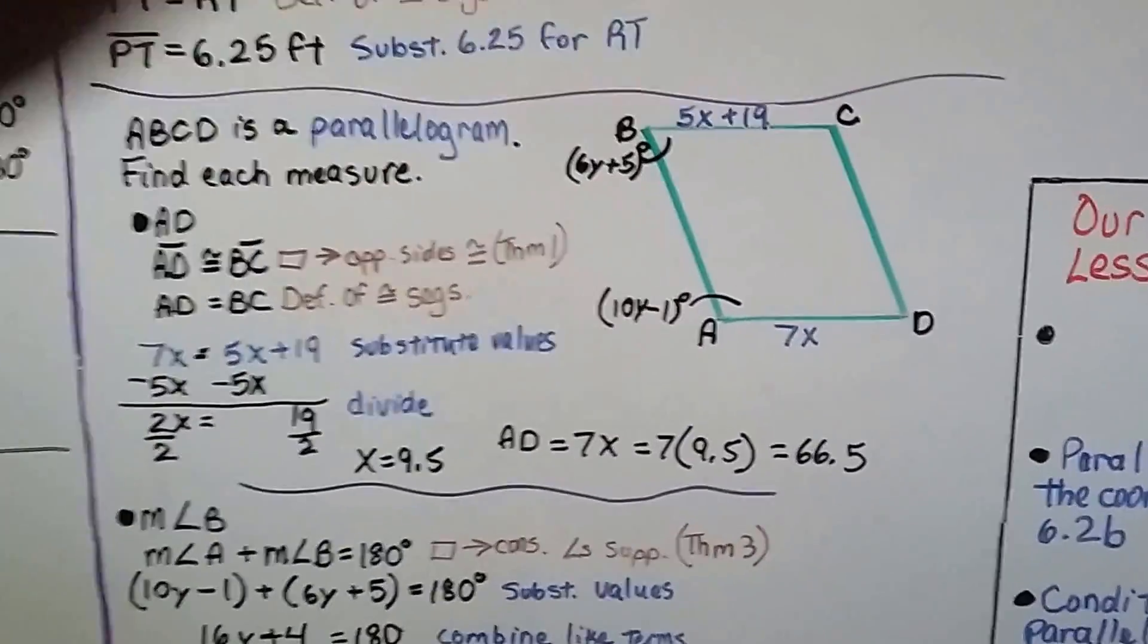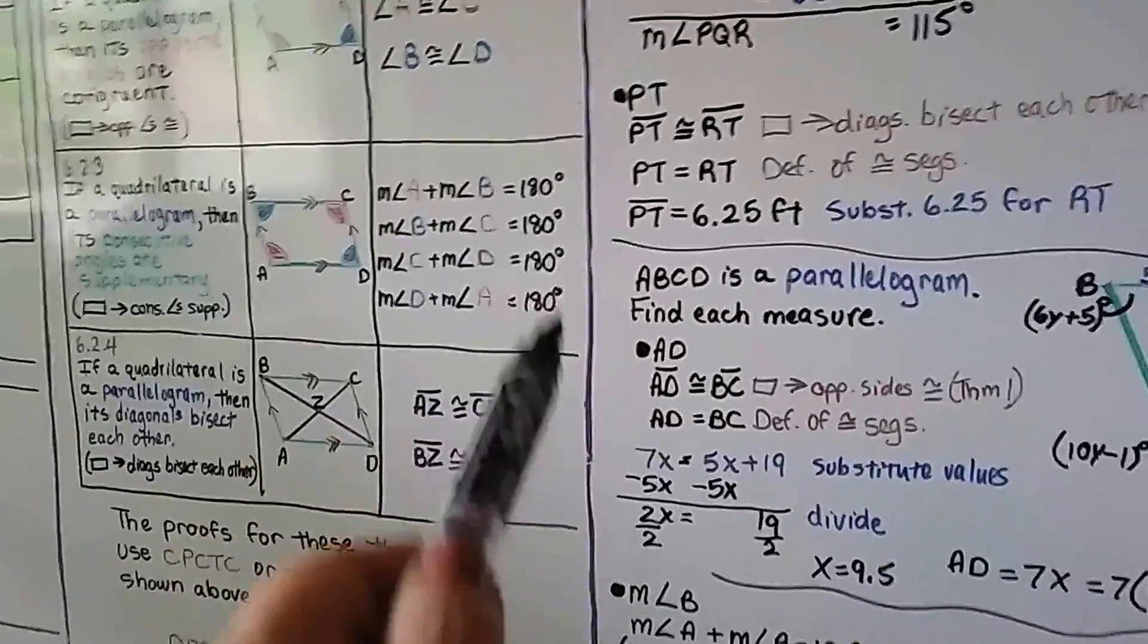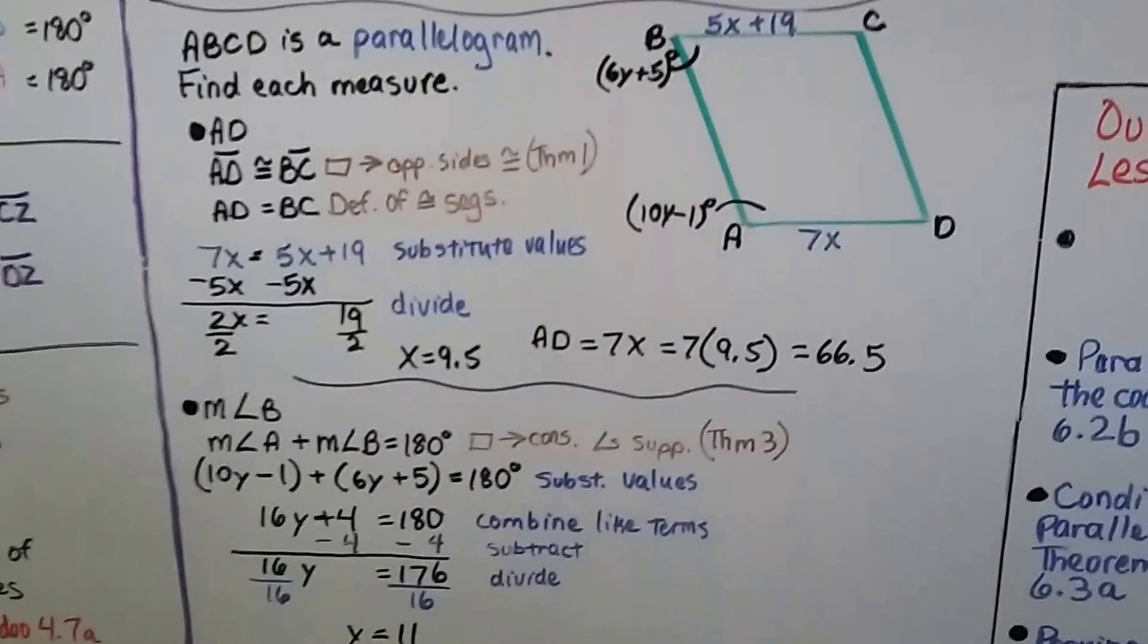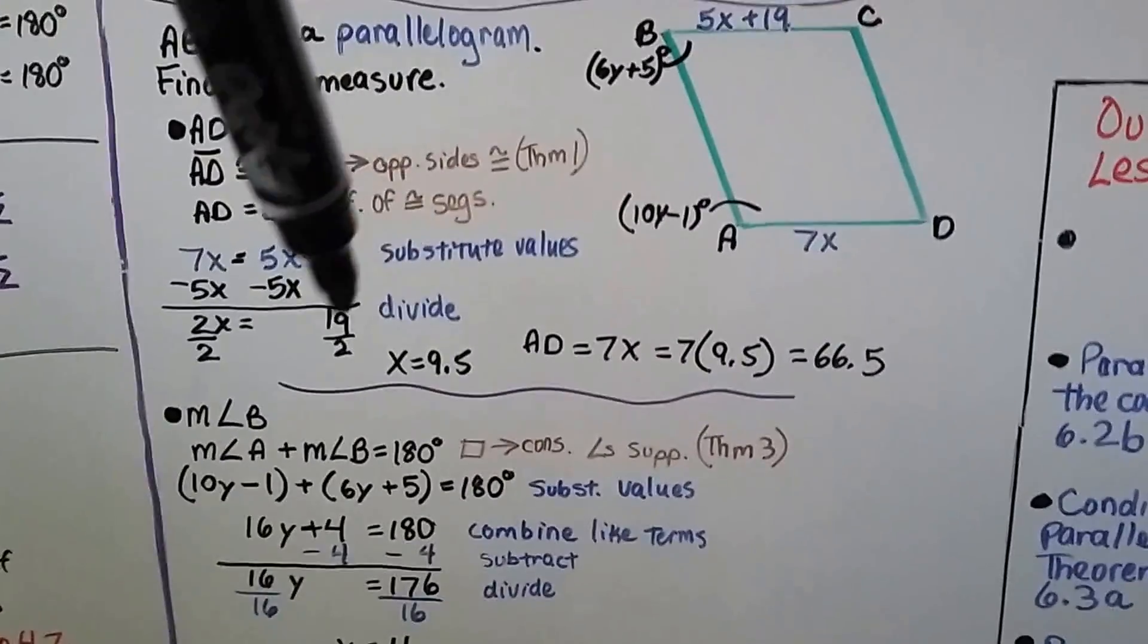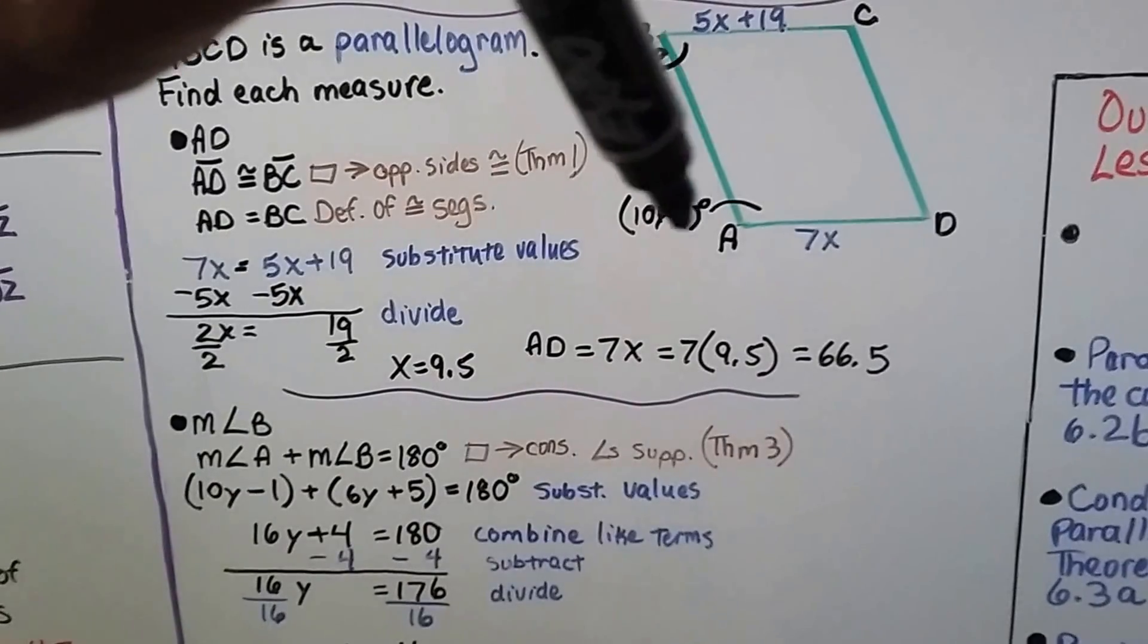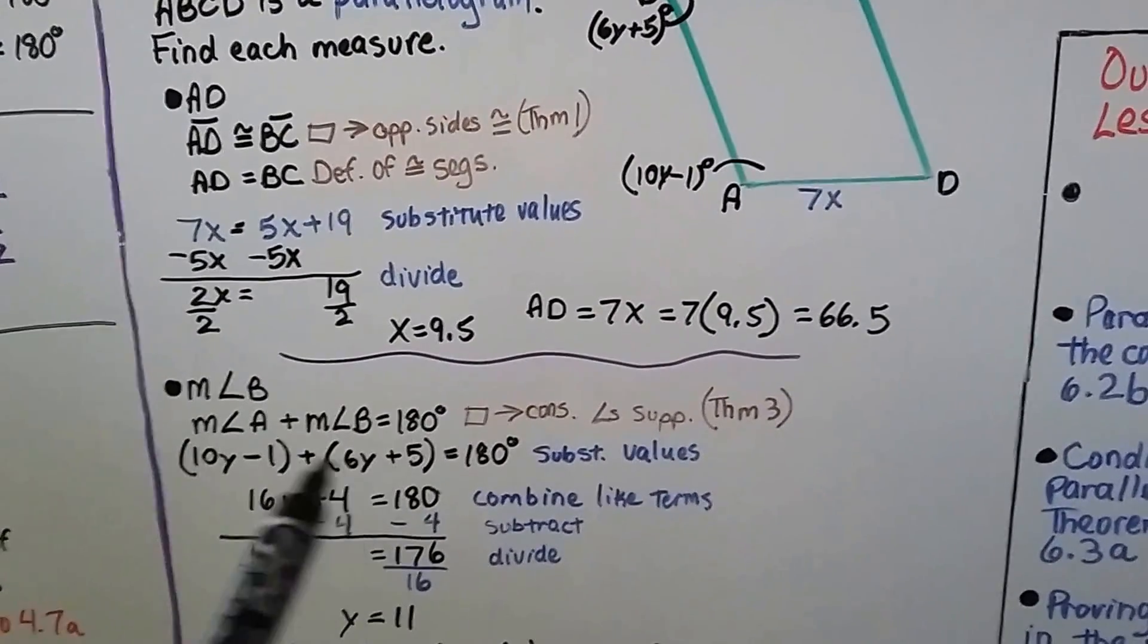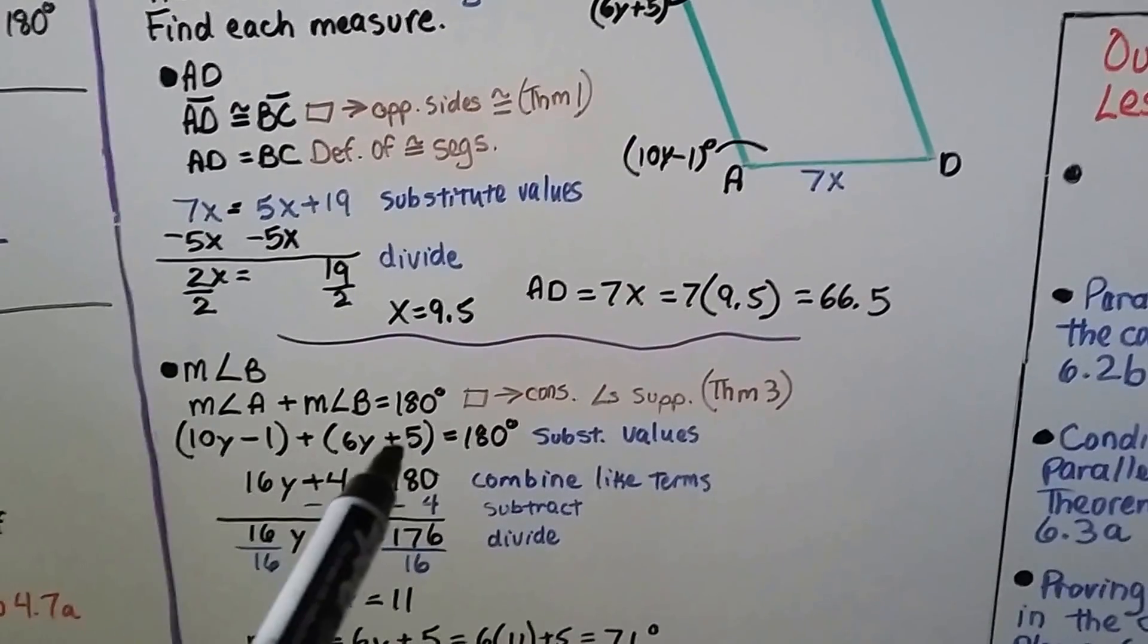Now we need to find the measure of angle B. Well, we know from our third theorem that they're supplementary. They should equal 180 degrees. And that means that this angle B plus angle A should equal 180 degrees. And we add them together when we substitute the values and we get this equation.